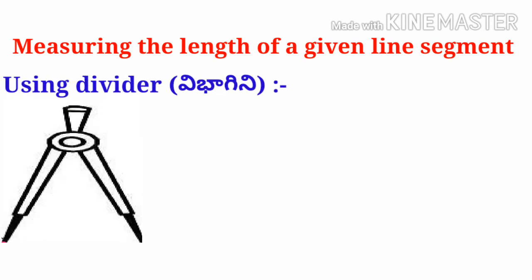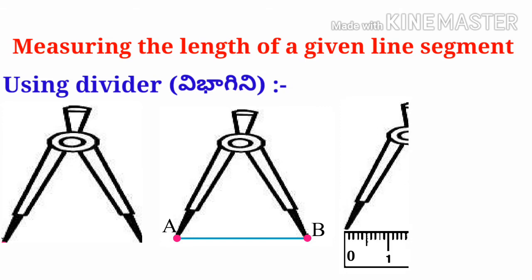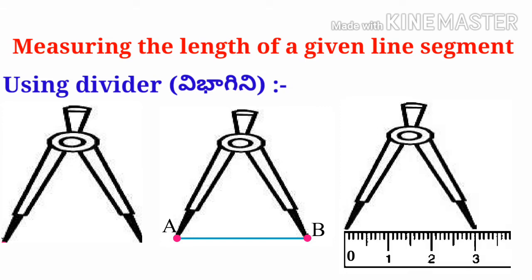Now using divider. Let us have the picture of a divider. It has two sharp end points. Let us know how to find the length of the line segment using divider. Put one end of the sharp point on A and another end on B. Now take the same length of the divider and put it on the scale. One end point on 0 and another end point showing 3. So 3 minus 0 is 3 centimeters. The length of line segment AB is 3 centimeters.